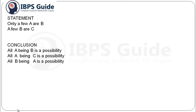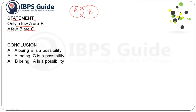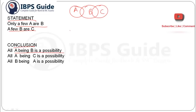Let's move to the questions. First statement says: 'Only a few A are B' and 'A few B are C'. Conclusion one says: 'All A being B is a possibility.' Can all A be B? No, it is not possible, because in the case of 'only a few', only the portion which is common between the individuals will be shared by A — the first entity before whose name 'only a few' is included. So only this area of A can share its boundary with B, and not the remaining part. So this conclusion becomes wrong.